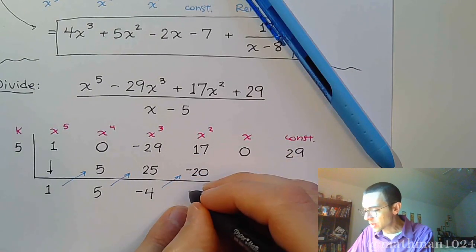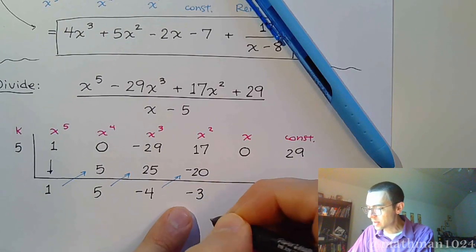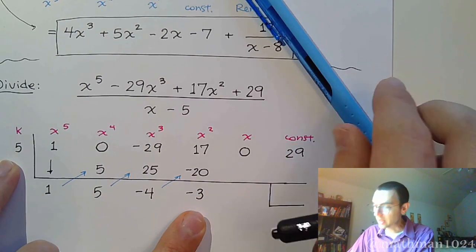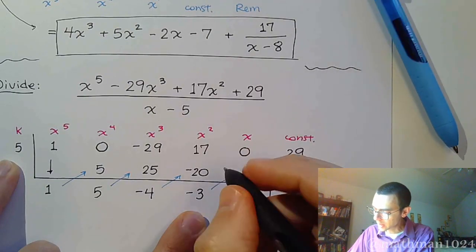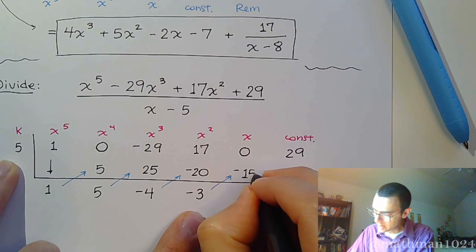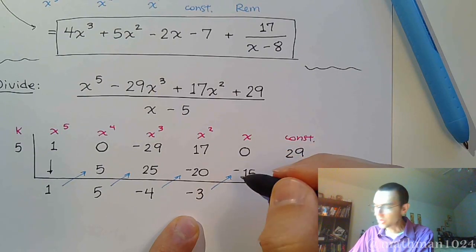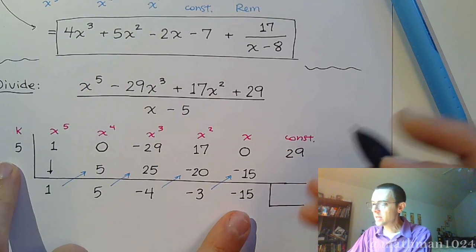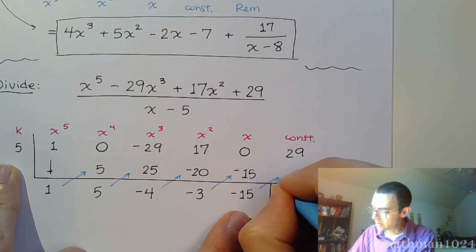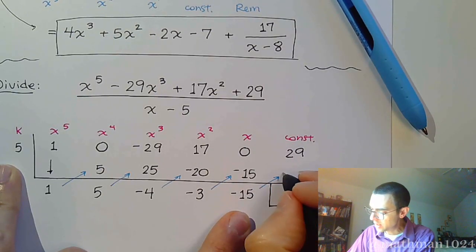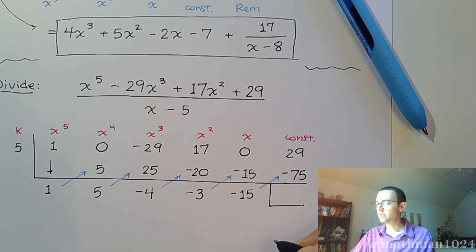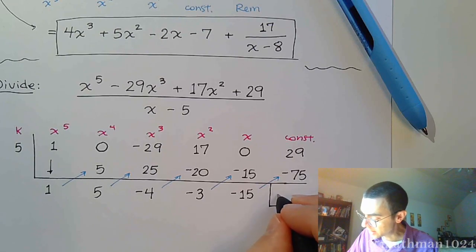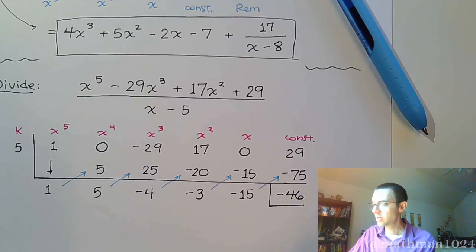17 minus 20 is negative 3. Multiply times K. Negative 15 combined with 0 is negative 15. 5 times negative 15 is negative 75. And you combine 29 and negative 75, you get a negative answer. And we get negative 46.